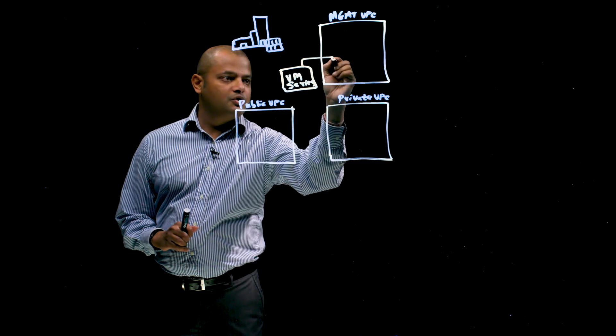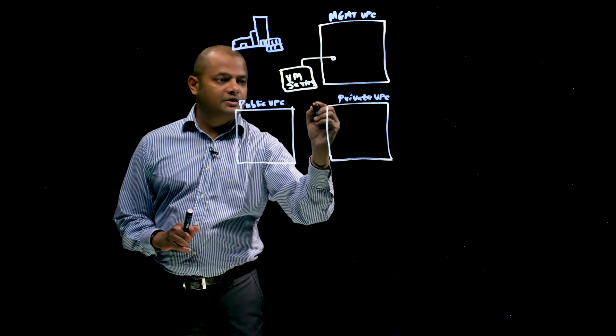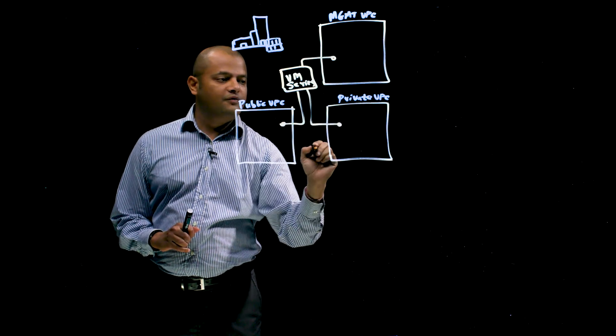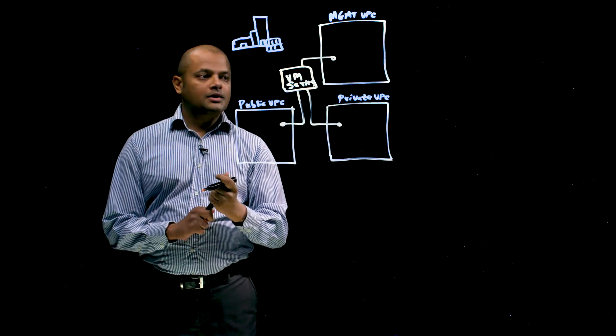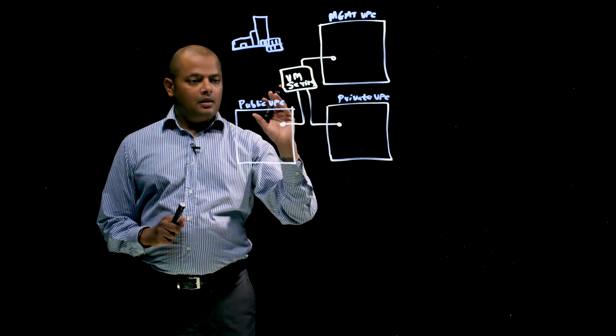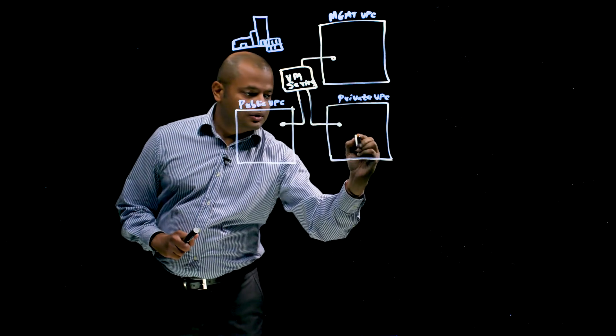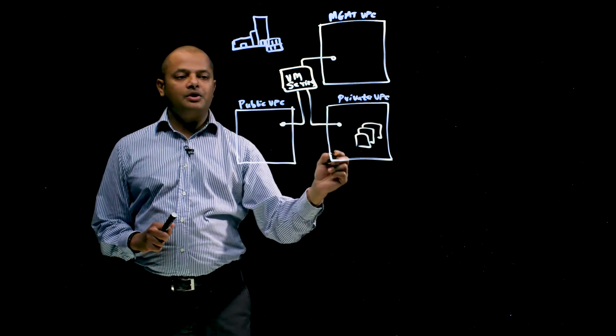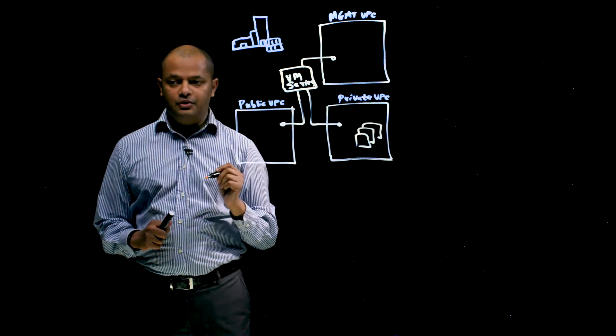So let's take a look at how VM series gets deployed in the setup. So VM series is deployed as a virtual firewall. It's got an interface in the management network. It's got an interface in the public VPC. And it's got an interface in the private VPC. So the private VPC is where all your application environments are living.